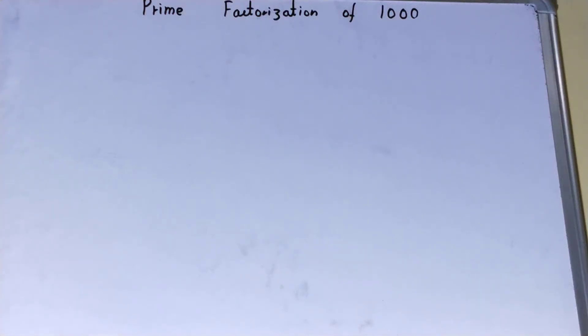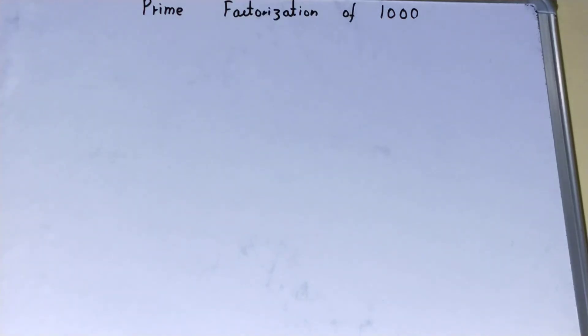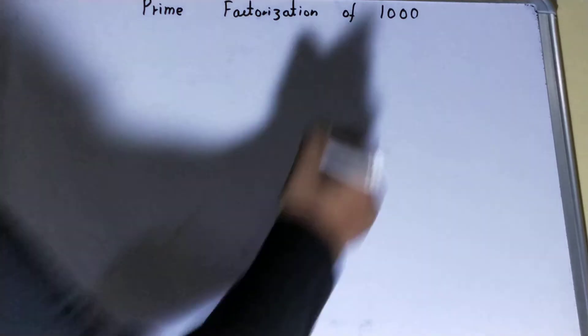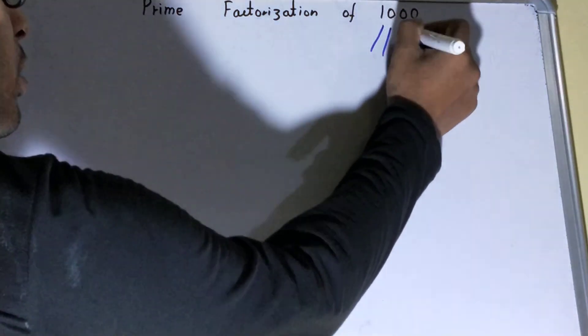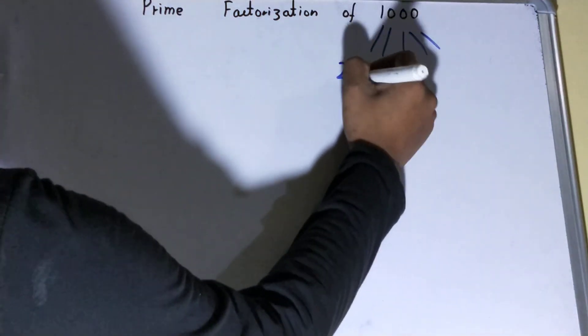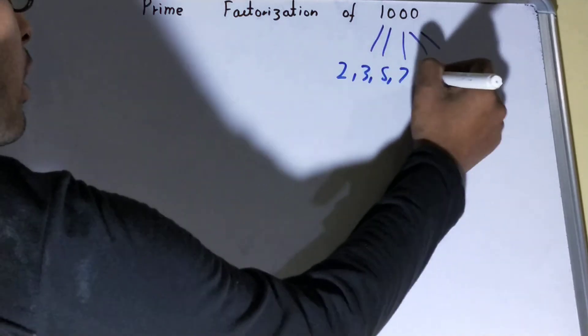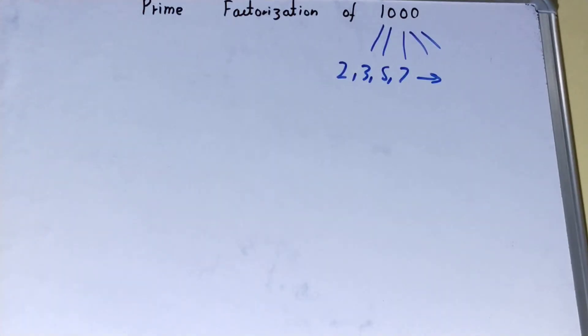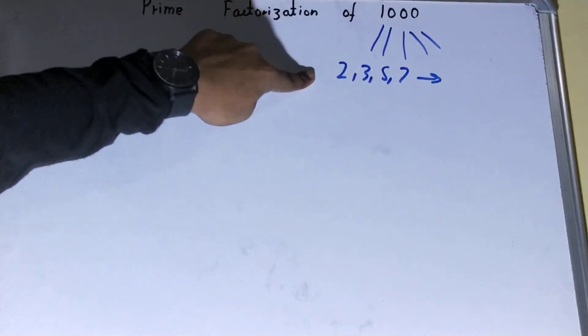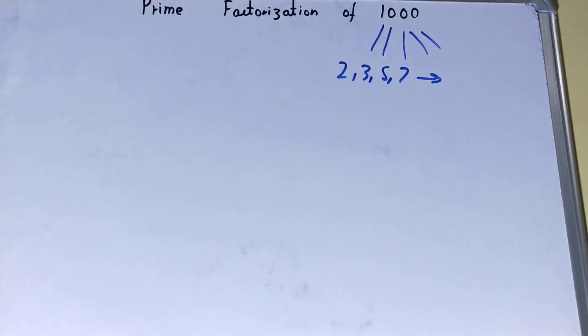Hello friends, and in this video I will be helping you with the prime factorization of 1000. So let's start. Prime factorization is basically converting the number into a group of prime numbers, like 2, 3, 5, 7, and so on. The process of converting the number into a group of primes is called prime factorization.